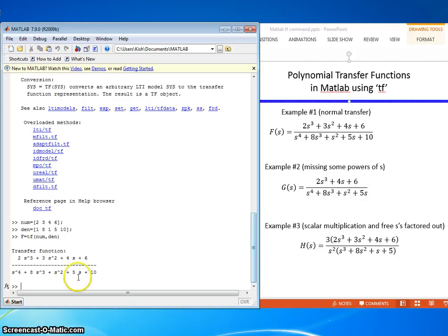How do you do that in MATLAB? You have to account for all powers of s. So in this case, we would go num equals 2. We don't have anything for s squared, so we actually have to put the 0. And then we have the 4 times s and the 6.